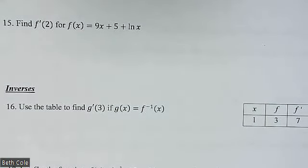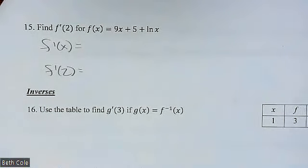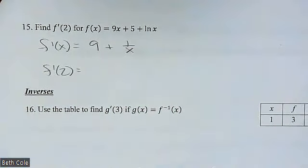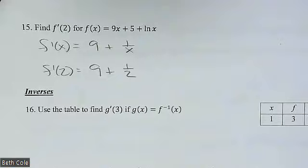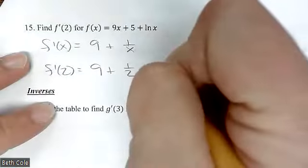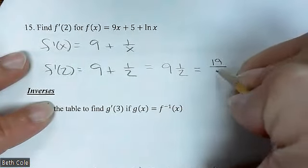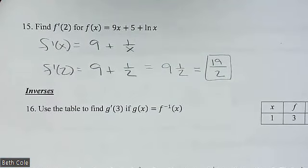Not every problem is going to be super difficult — there will be some hard ones, but this one's not bad. Find F prime of 2 — we're going to get the derivative and then plug in 2. What would the derivative of that function be? 9 — the 5 goes away — plus 1 over x. They're not all going to be super difficult. Then we're just going to plug in 2, so 9 plus one half. Because it's multiple choice, 9 plus one half isn't going to be an answer choice as written — it would be 9 and a half, which as an improper fraction is 19 over 2, since 9 times 2 is 18 plus 1.